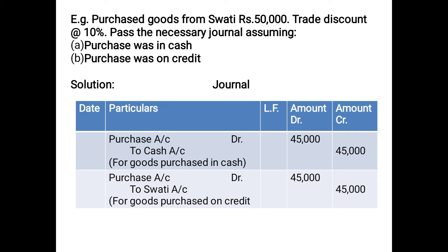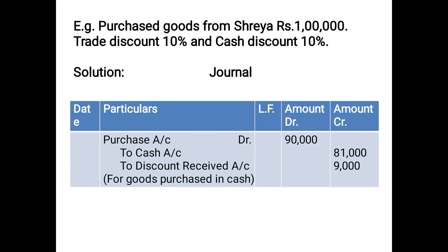In the first case, assuming the purchase was in cash, we do not use Swati's name. The entry is: Purchase Account debited Rs. 45,000 to Cash Account Rs. 45,000. Narration: for goods purchased in cash. In the second case, assuming purchase on credit: Purchase Account debited Rs. 45,000 to Swati Rs. 45,000. Note: since Swati is a human being, the word 'account' should not be suffixed — that error was intentional for your practice.